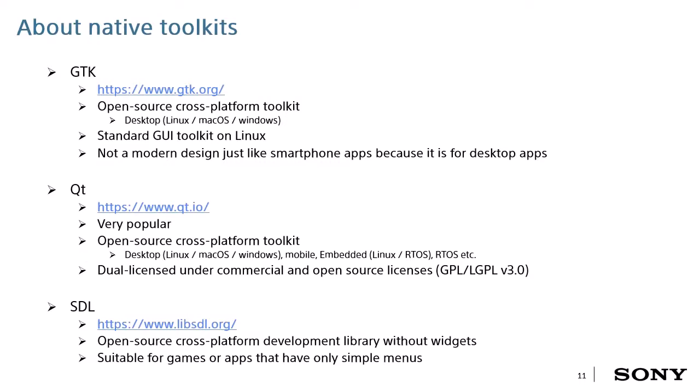I will explain about some native toolkits such as GTK, Qt, and SDL. GTK is a major toolkit in Linux. It supports cross-platform like desktops. However, it doesn't support modern UI like a smartphone, so GTK is suitable for desktop apps. Qt is very popular and is often used in embedded products. It also supports RTOS, Android, and iOS platforms. But its software license is dual license — commercial and open source. Finally, SDL is a simple graphics library, suitable when you use a simple menu or create game apps, as it has no widgets for creating UI, so it's not suitable for normal UI.